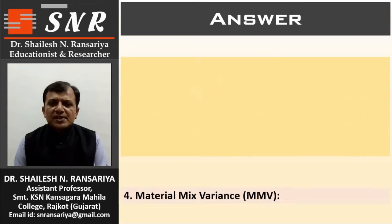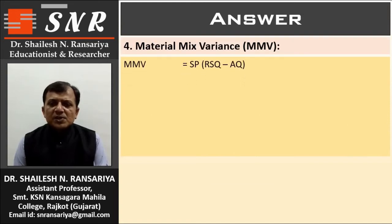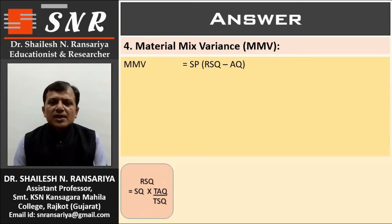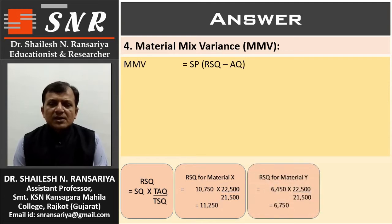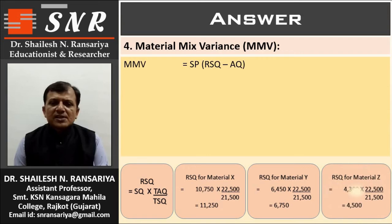Now, Material Mix Variance. MMV = SP × (RSQ − AQ). First we calculate Revised Standard Quantity (RSQ) = SQ × (TAQ ÷ TSQ). For X: 10,750 × (22,500 ÷ 21,500) = 11,250. For Y: 6,450 × (22,500 ÷ 21,500) = 6,750. For Z: 4,300 × (22,500 ÷ 21,500) = 4,500.